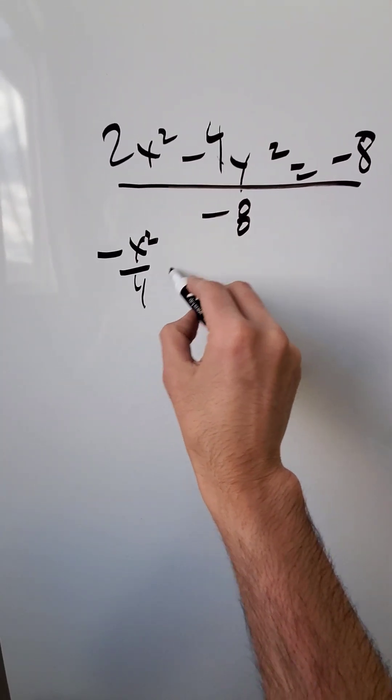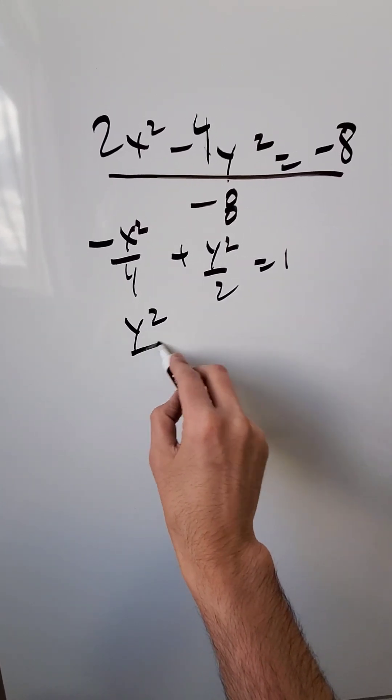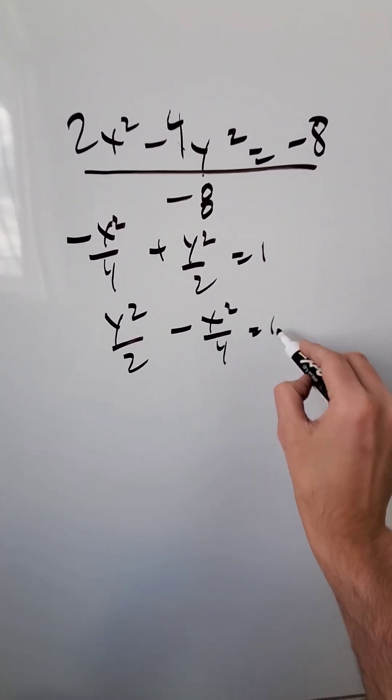I will have here -x²/4 + y²/2 = 1. Rewrite it like this: y²/2 - x²/4 = 1.